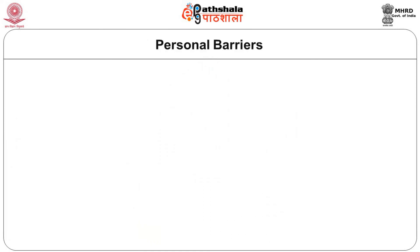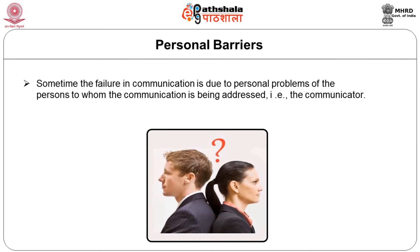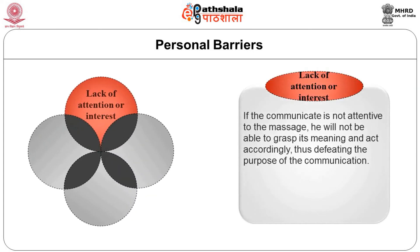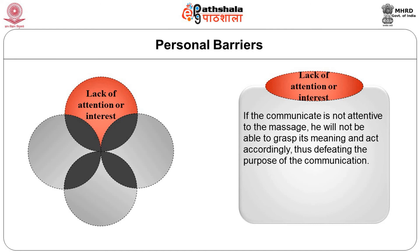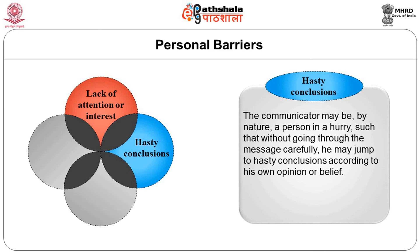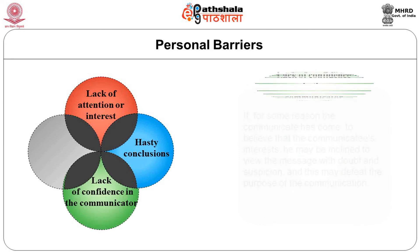The third barrier is personal barriers — sometimes the failure in communication is due to personal problems of the persons being communicated to. These may include lack of attention or interest: if the communicator is not attentive to the message, he will not be able to grasp its meaning and act accordingly. Sometimes there may be hasty conclusions — the communicator may by nature be a person in a hurry who, without going through the message carefully, jumps to hasty conclusions based on his own opinion and belief.